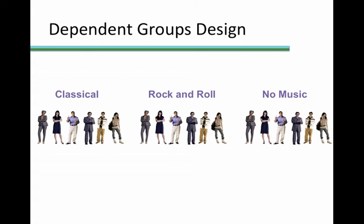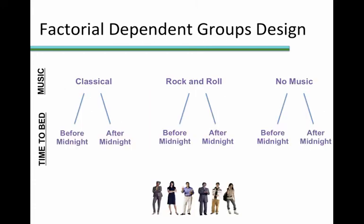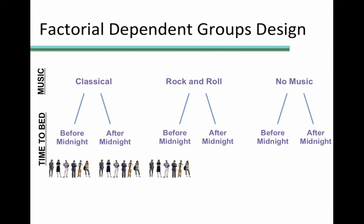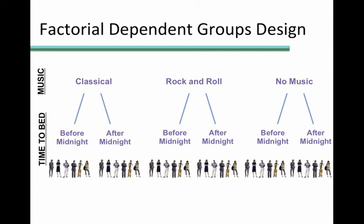We also can have a within participants factorial design. If we add in the independent variable of time to bed, our participants would be quite busy since they would have to experience all six possible combinations of conditions — all three music conditions combined with a before midnight time to bed condition, and then all three music conditions combined with an after midnight time to bed condition.